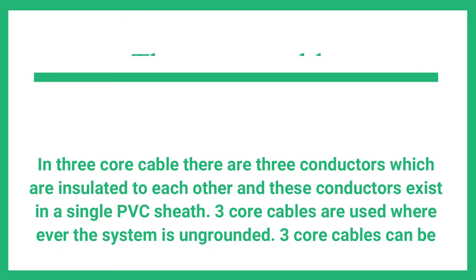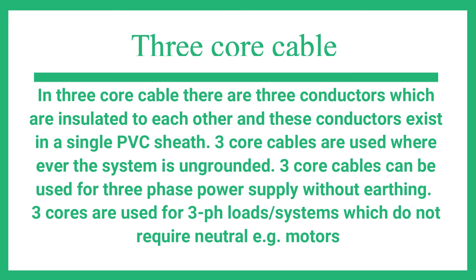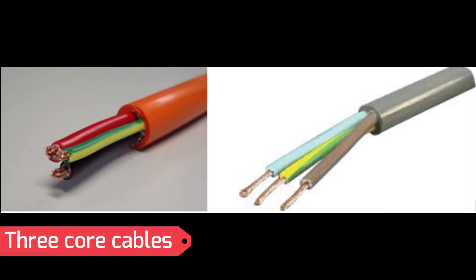In three core cable there are three conductors which are insulated from each other, and these conductors exist in a single PVC sheath. Three core cables are used wherever the system is ungrounded. Three core cables can be used for three phase power supply without earthing. Three cores are used for three phase load systems which do not require neutral, e.g. motors. Three core cables are shown in figure.